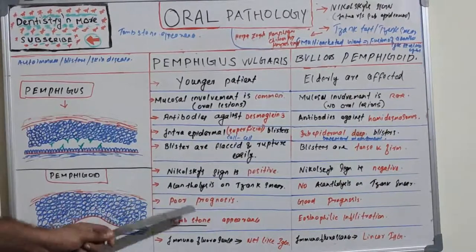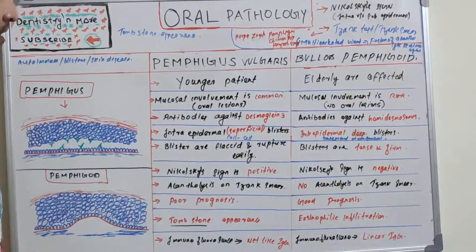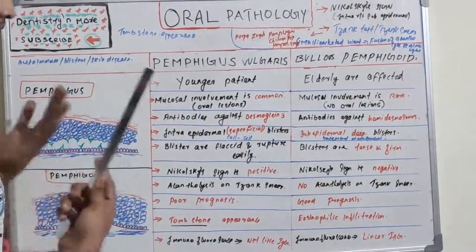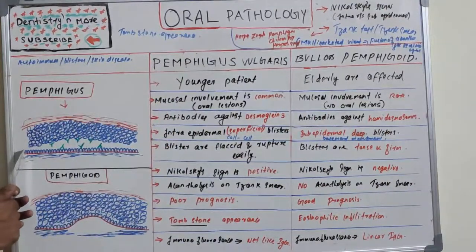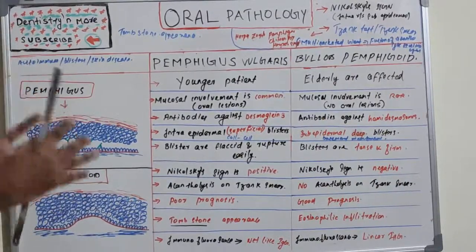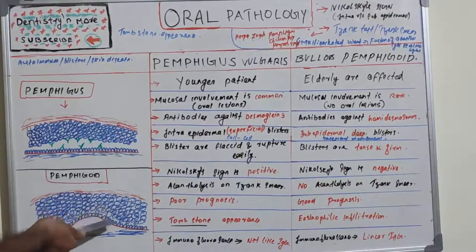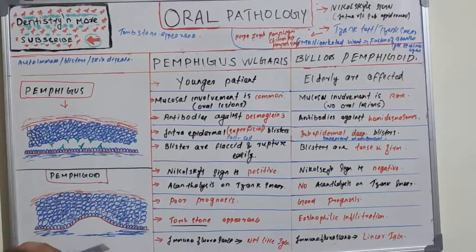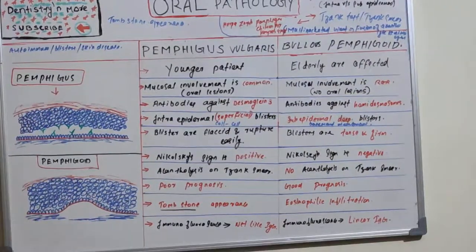Regarding prognosis, pemphigus vulgaris has a poor prognosis, whereas bullous pemphigoid has a good prognosis with very good patient recovery. Tombstone appearance is seen with pemphigus vulgaris — you can see the tombstone appearance of the basal cells, resembling the tombstones in a graveyard. This is clearly visible in pemphigus because there is intra-epithelial separation; in pemphigoid, there is basement membrane separation so tombstone appearance is not seen.